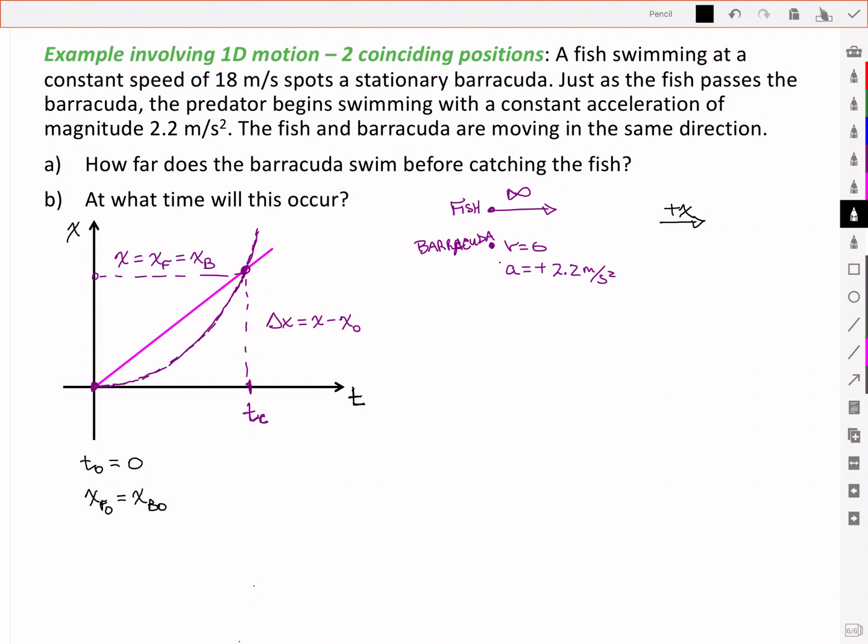So they start off, we're starting the problem right when the barracuda crosses the fish, or sorry, right when the fish crosses the barracuda and the barracuda spots it. That's our zero point. The fish is starting off with a constant velocity, and that happens to be a positive 18 meters per second.